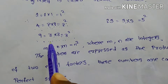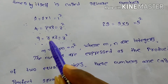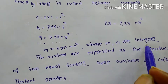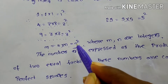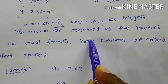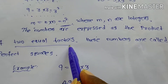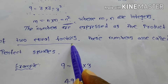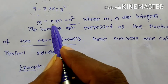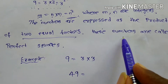Similarly, I am writing M = N × N. For example, 9 = 3 × 3, that means 9 is represented as the product of the same number 2 times, so M = N × N. It is called N squared, where M and N are integers. The numbers are expressed as the product of 2 equal factors.